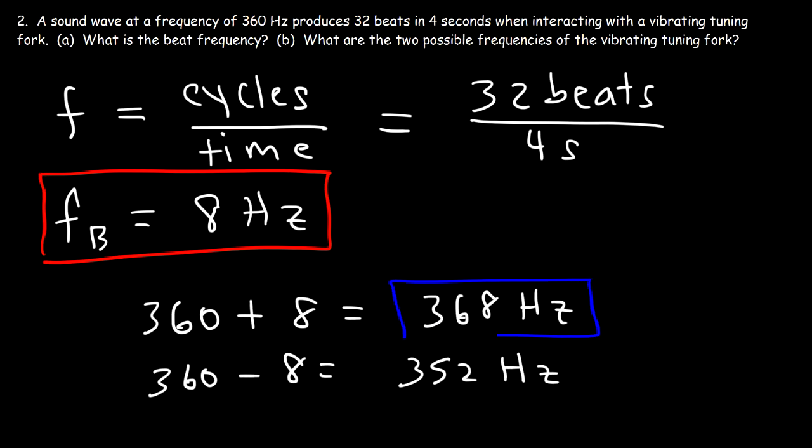This frequency with this one will produce a beat frequency of 8 because they differ by 8 units. And if these two are next to each other, they will also produce a beat frequency of 8. So the tuning fork can be any one of these two numbers.